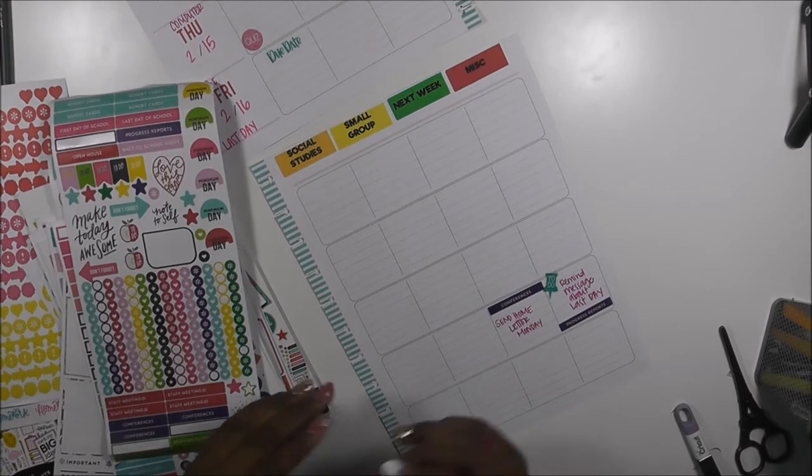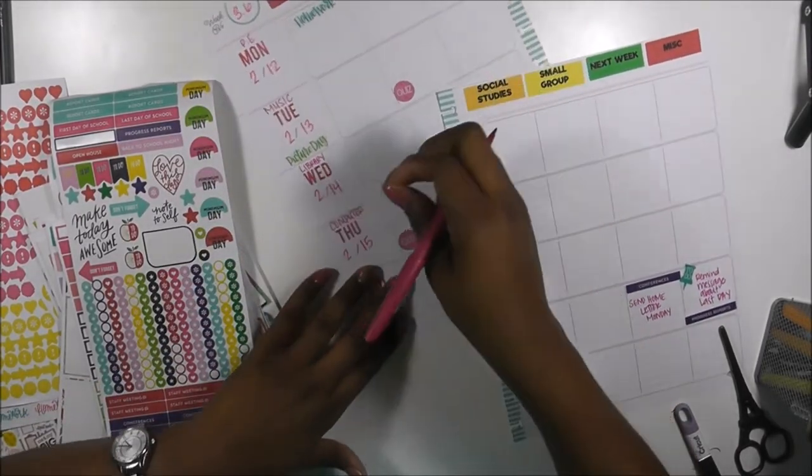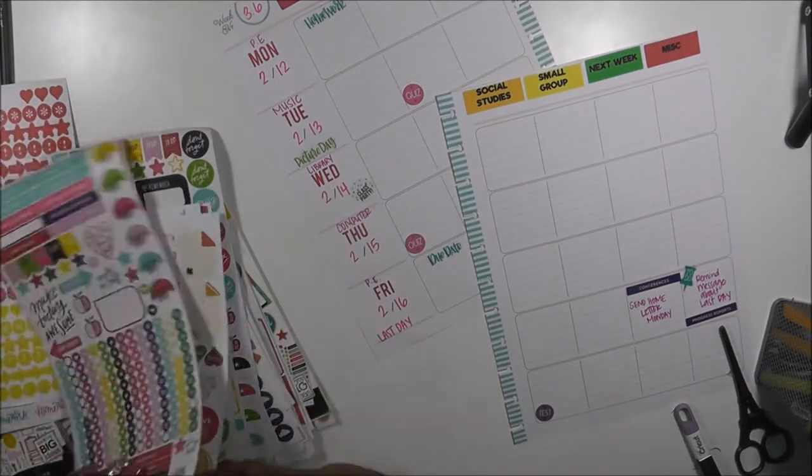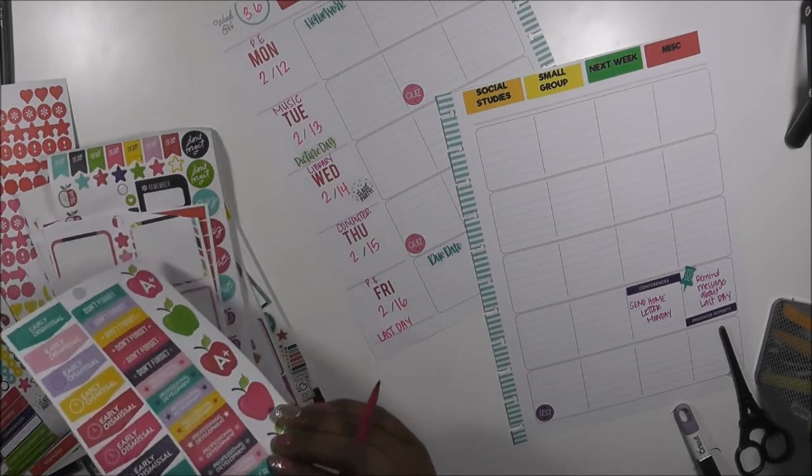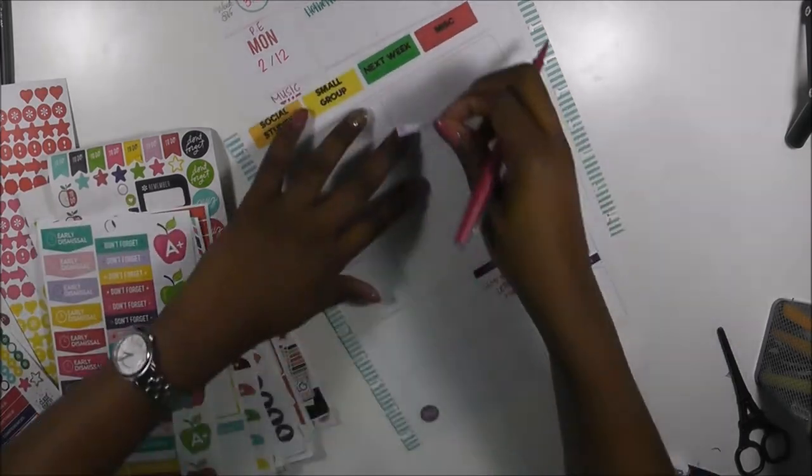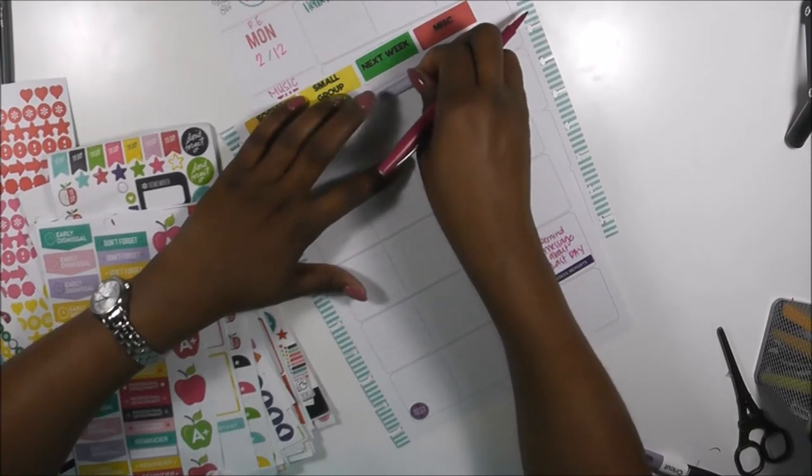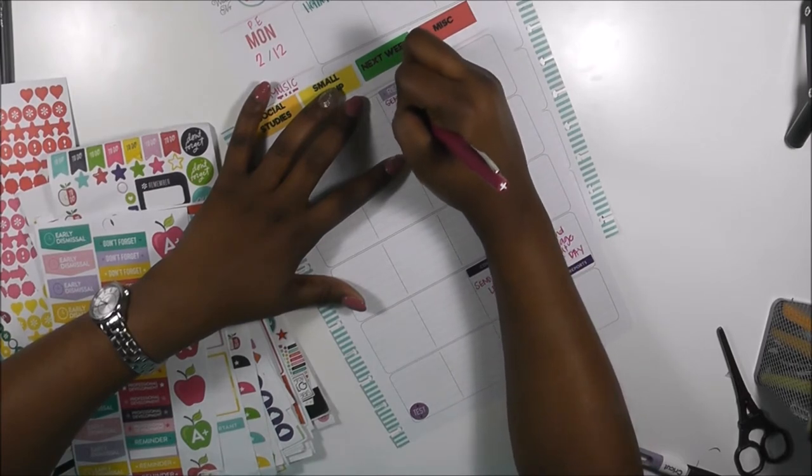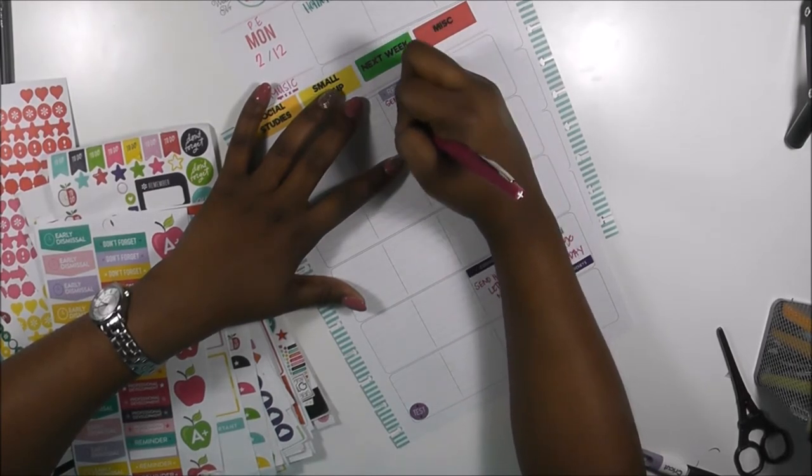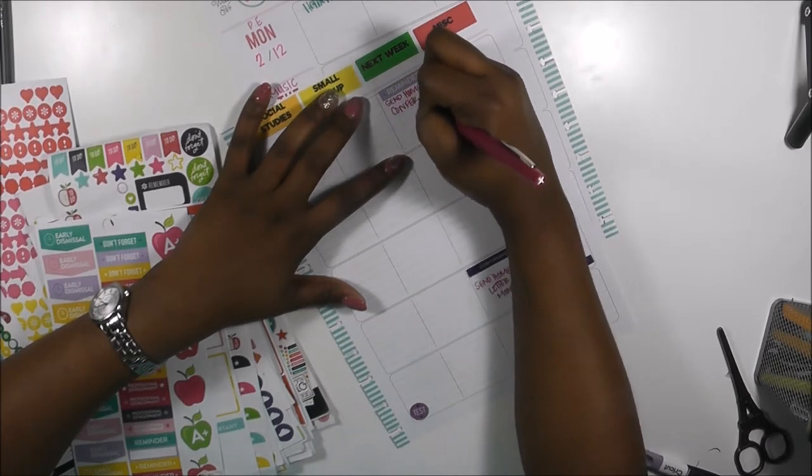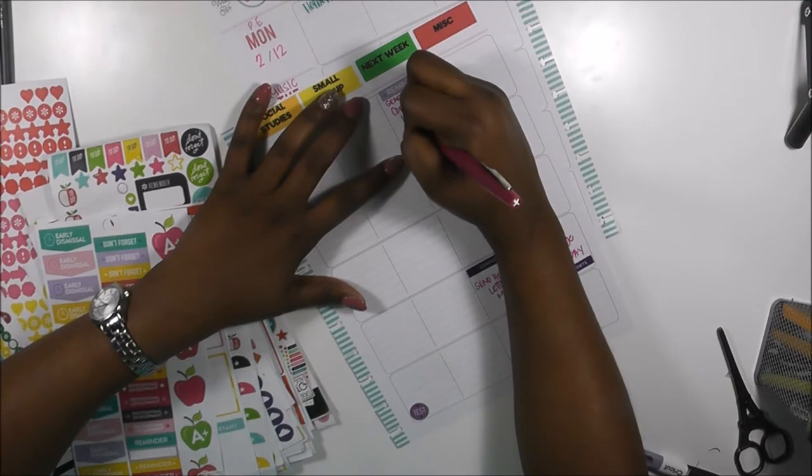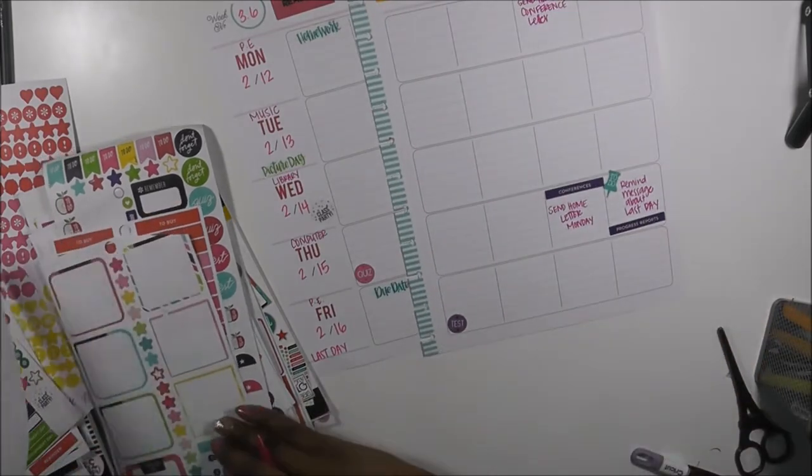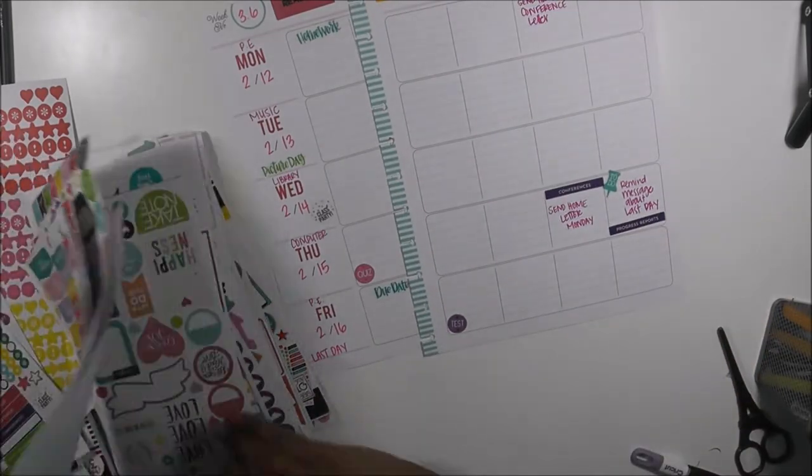I'm going to send home the letter for conferences on Monday. We also have a class party scheduled on Wednesday, so I'm going to signify that, put that right here with a sticker. I'm going to give myself a reminder to send home parent letter, conference letter. All right, so let's get into the meat of our planning for this week.